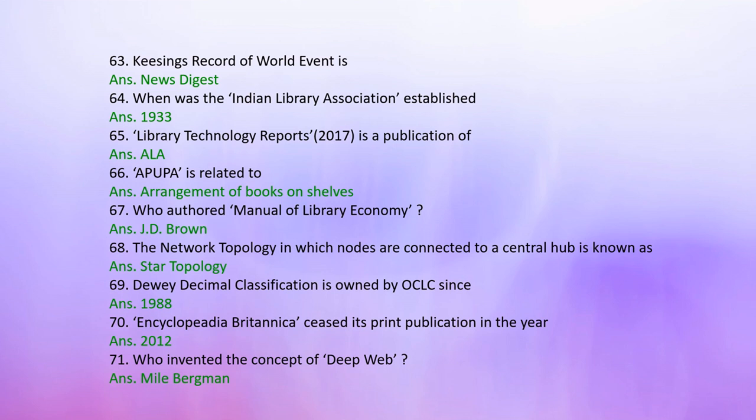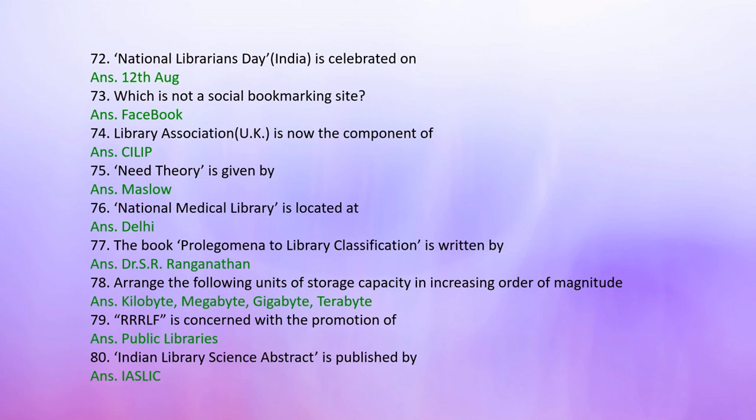Question 70: Encyclopedia Britannica, C.G. Spence publication, was published in the year — Answer: 2012. Question 71: Who invented the concept of the deep web? Answer: Neil Bergman. Question 72: National Librarians Day in India is celebrated on — Answer: 12th August. Question 73: Which is not a social bookmarking site? Answer: Facebook. Question 74: Library Association UK is now a component of — Answer: CILIP. Question 75: Need theory is given by — Answer: Maslow.